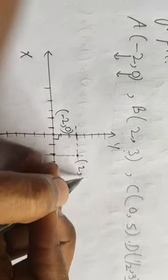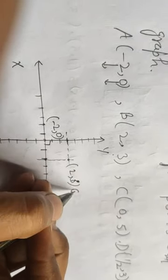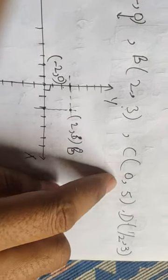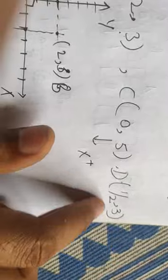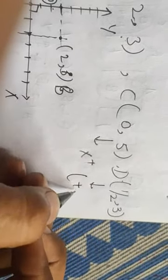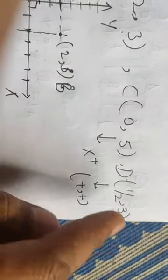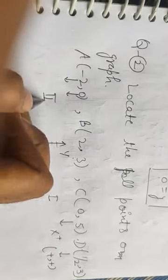For point C = (0, 5): since the x-coordinate is 0, this point lies on the y-axis — specifically on the positive y-axis at 5. For point D = (1/2, 3): both coordinates are positive, so D must lie in the first quadrant. This is your first quadrant, second quadrant, third quadrant, and fourth quadrant.